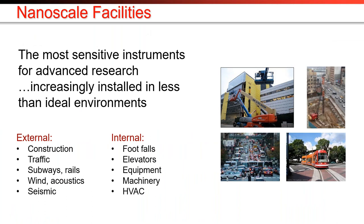Increasingly, new advanced research facilities are being sited in urban environments — environments that are hostile from a floor vibration perspective. Floor vibration comes from two directions: either from inside the building or from outside. Externally, you have things like construction, road traffic, trucks, cars, subways, light rails, and trains. Also wind and acoustics — wind driving on a building will excite resonant structures and increase floor vibration.